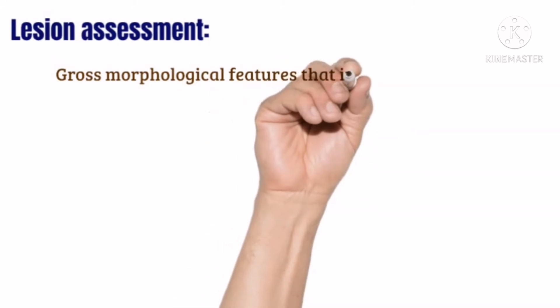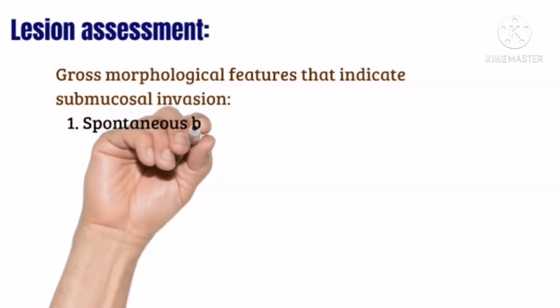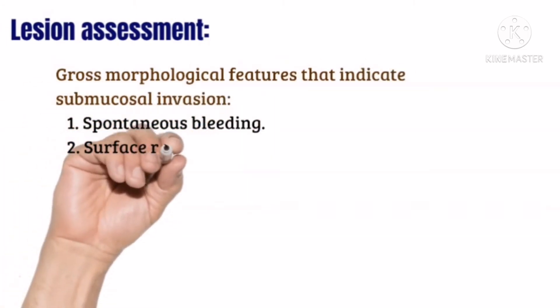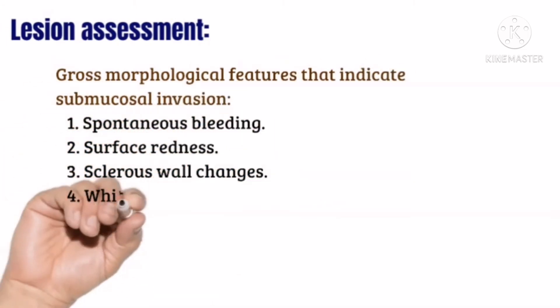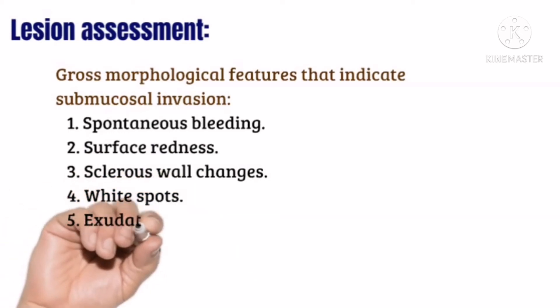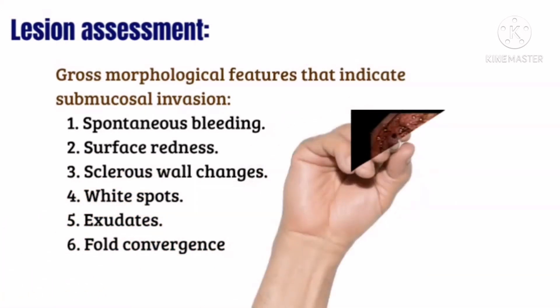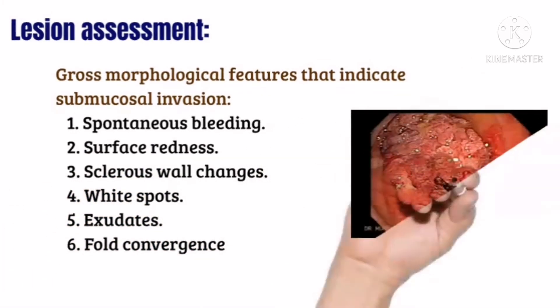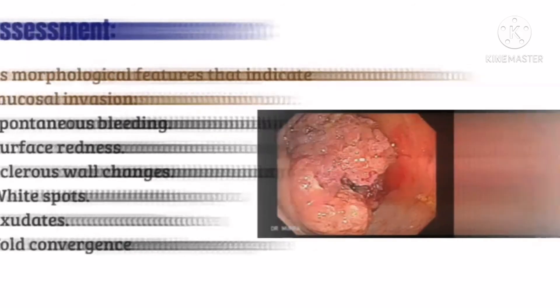Gross morphological features that indicate submucosal invasion include: spontaneous bleeding, surface redness, sclerus, wall changes, white spots, oxidates, and fold convergence.